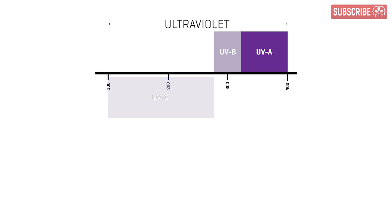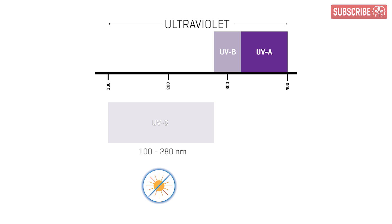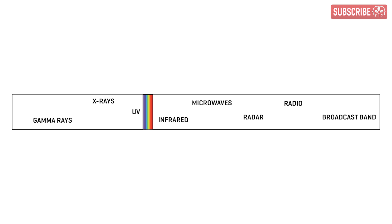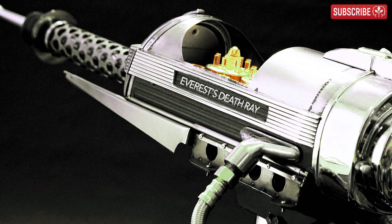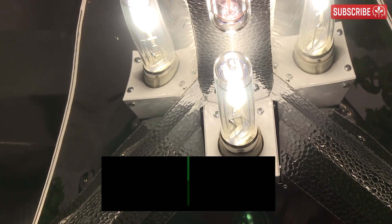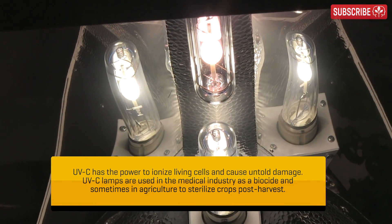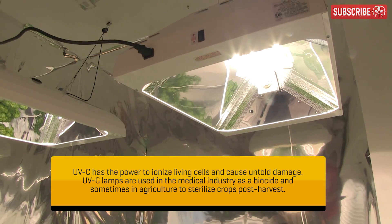Last but certainly not least, there's UVC — the bad boy of the pack. It's super high energy UV at 100 to 280 nanometers, effectively blocked out by our planet's ozone layer. In terms of the electromagnetic spectrum, we're getting close to x-rays now — think of it like a death ray. There's UV, and then there's UV.